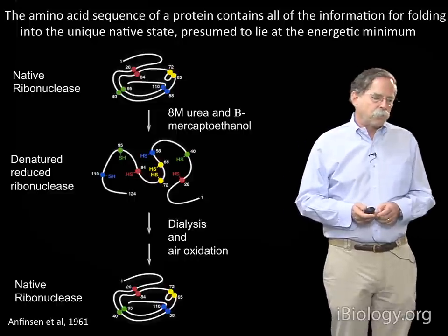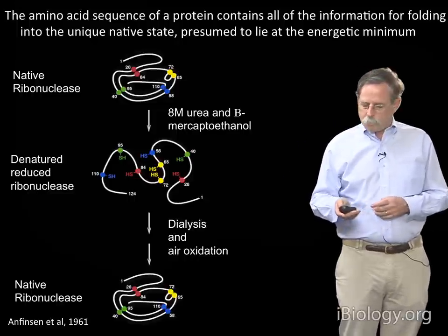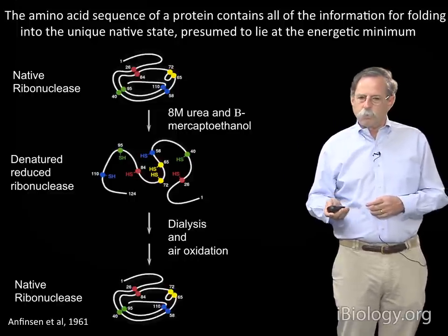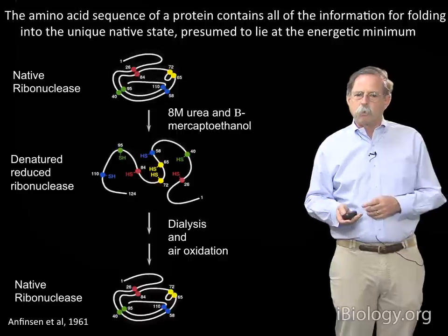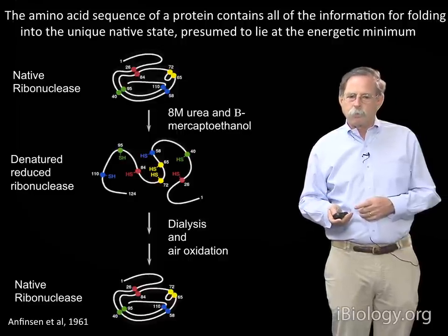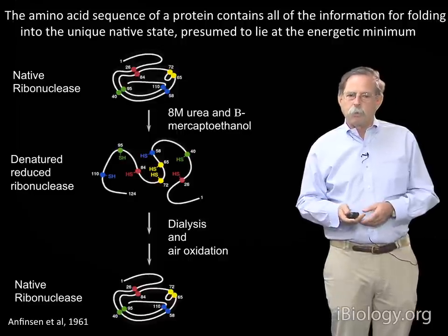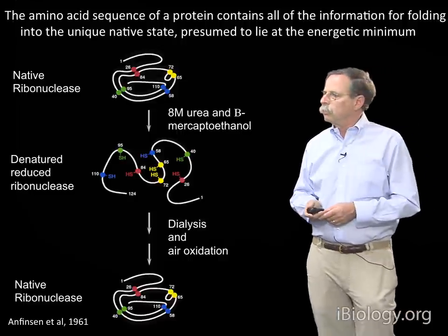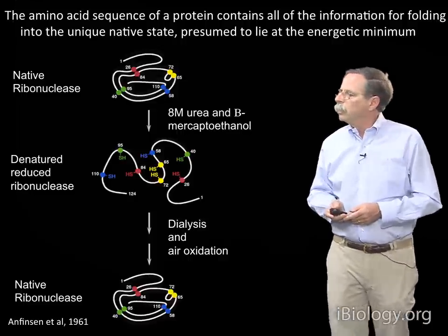This suggested that all of the information to properly fold a polypeptide chain is contained in its primary amino acid sequence, and that when it reaches the native state, it's at some sort of energetic minimum. This was an astonishing experiment. I remember being an undergrad at Brown University in 1972 when the Nobel Prize was conferred for this work — I thought it was one of the most indelibly beautiful experiments I'd ever heard of, and never thought I'd have anything more to do with protein folding.